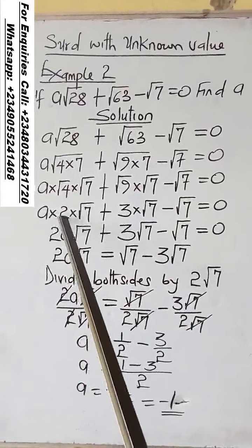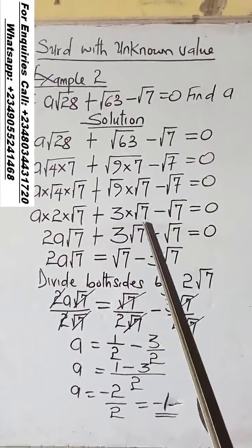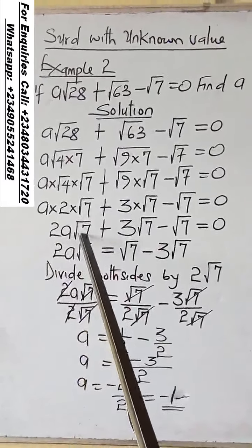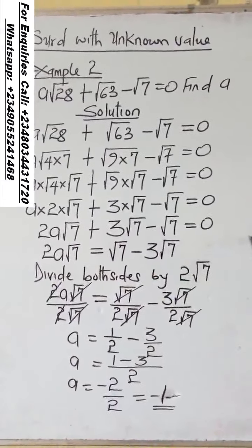So it will be A times 2 times root 7 plus 3 times root 7 minus root 7, which is 2A root 7 plus 3 root 7 minus root 7 equals 0.